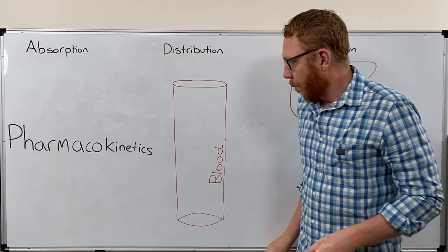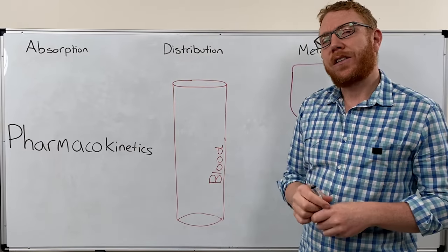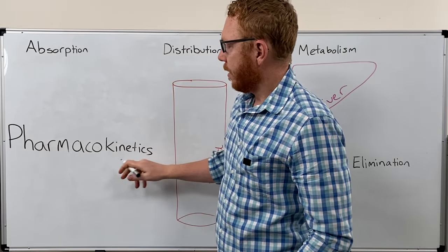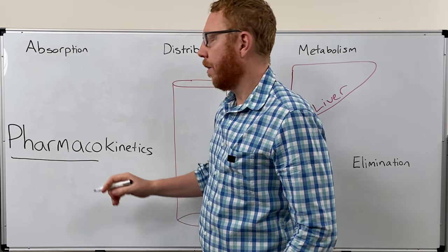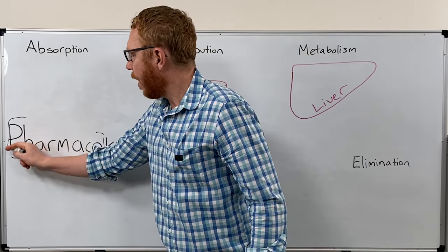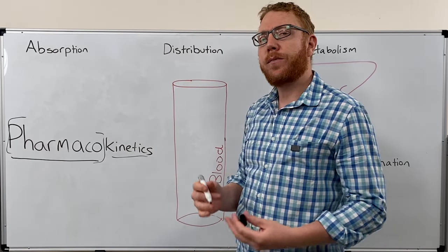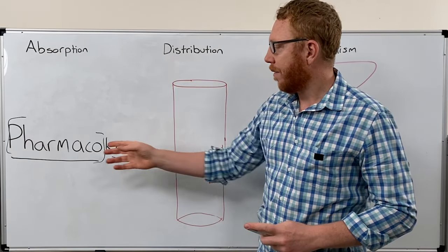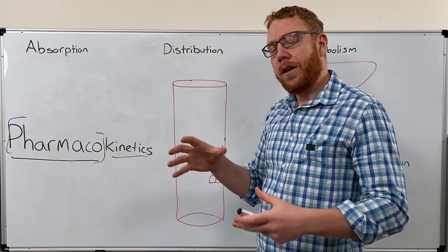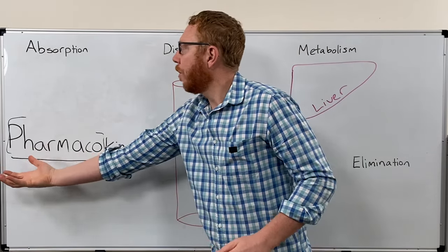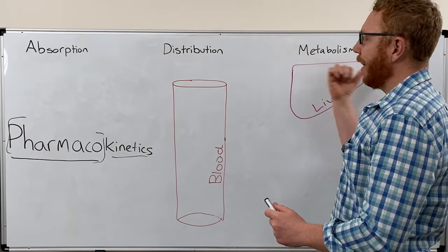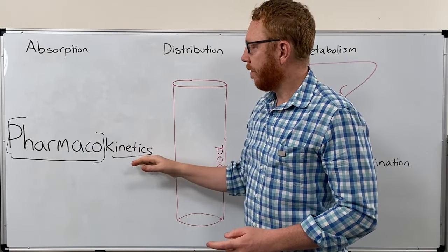Let's start with a definition and understand the concept of what it really is. Here's the word: pharmacokinetics. Let's break it down. Pharmaco — pharmacy — drugs. So we're referring to the drug. Kinetics is movement. So essentially, pharmacokinetics is the way that the drug moves through the body, or more precisely, the way drugs enter the body, move through the body, and then leave the body.